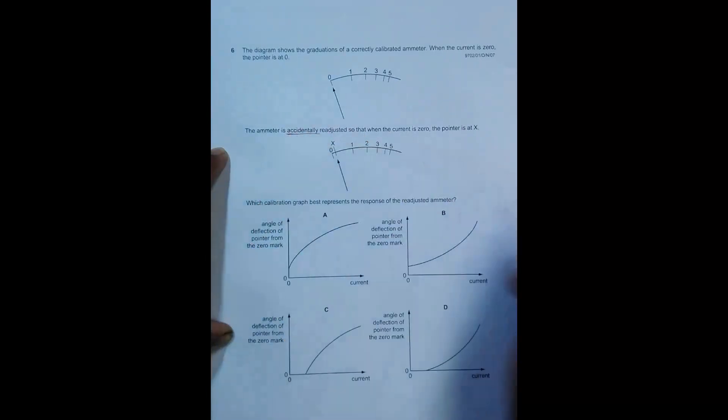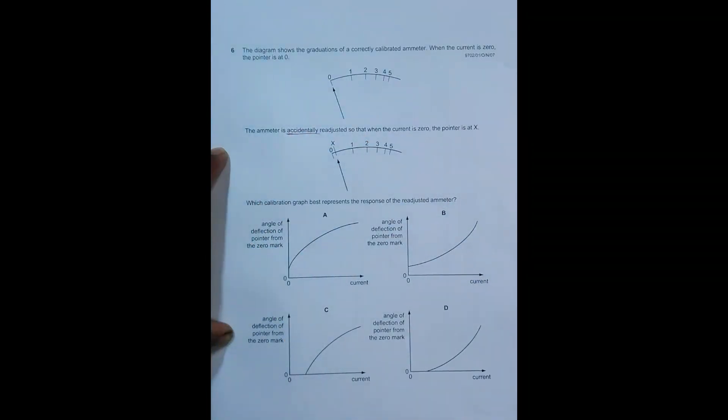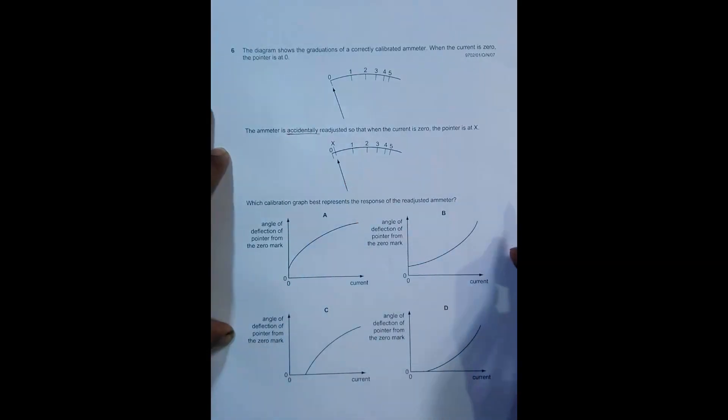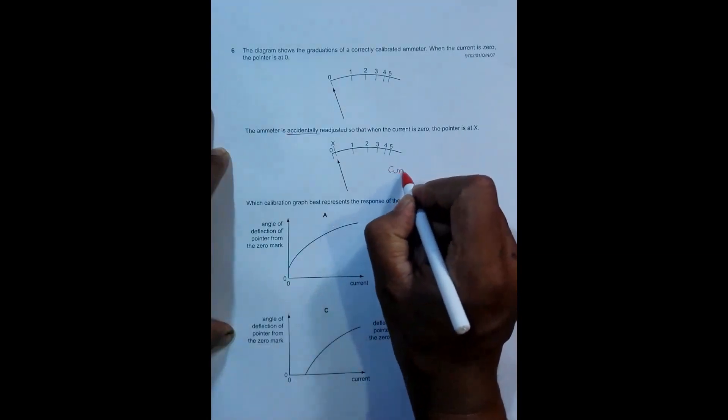When the current is zero, the pointer shows position x instead of zero. As it has been said, it is accidentally adjusted. Which calibration graph best represents the response of the readjusted ammeter? We have to say which calibration graph is the correct one.